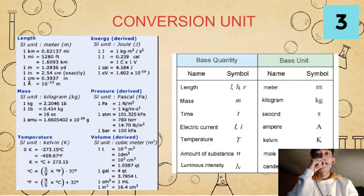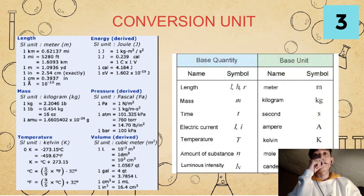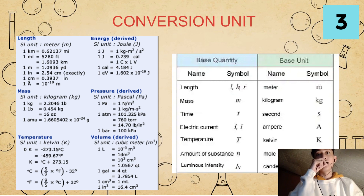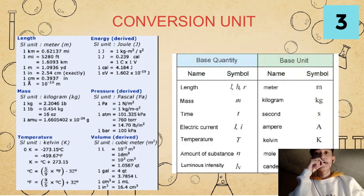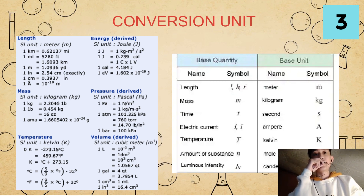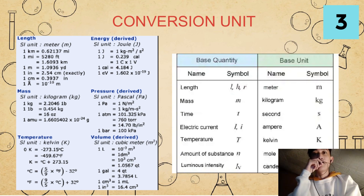For our length, our SI unit is equals to meter or m. For every 1 kilometer, it is equals to 0.62137 miles. For every 1 mile, it is equals to 5,280 feet, or 1.6093 km. For every 1 meter, it is equals to 1.0936 yards. For every 1 inch, there are 2.54 centimeters exactly. For every 1 cm, it equals 0.3937 inches. For every 1 angstrom, it is equals to 10 to the power of negative 10 m.